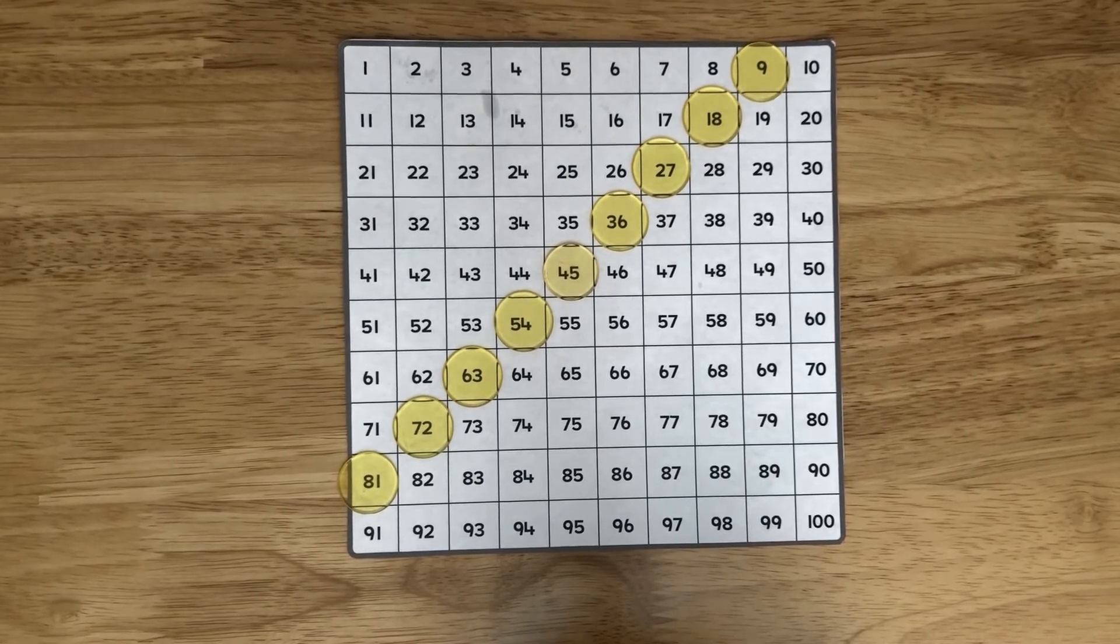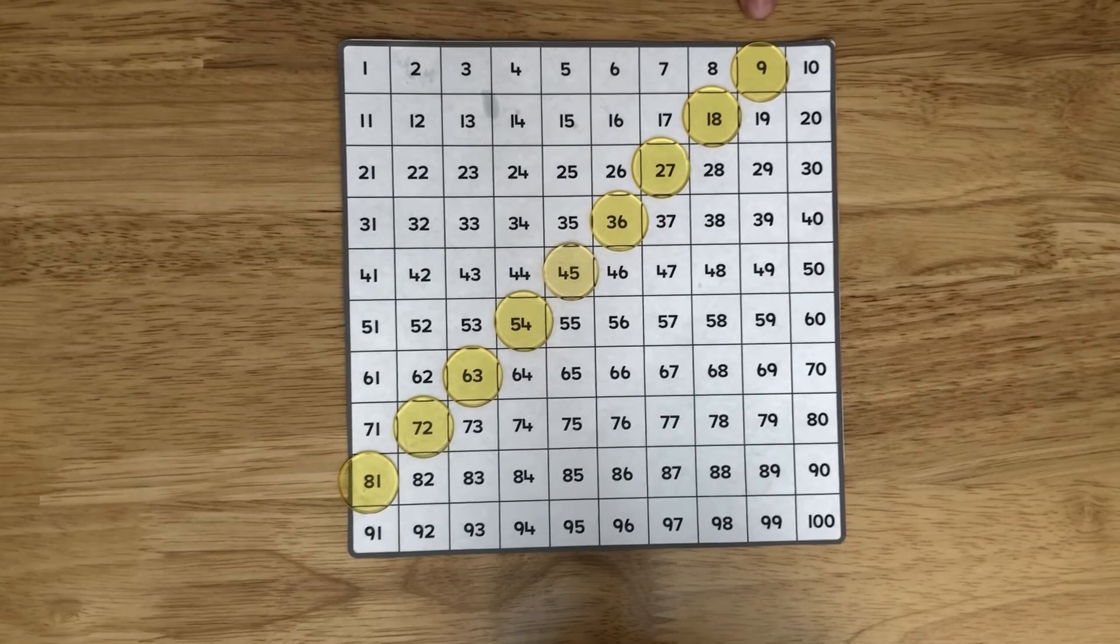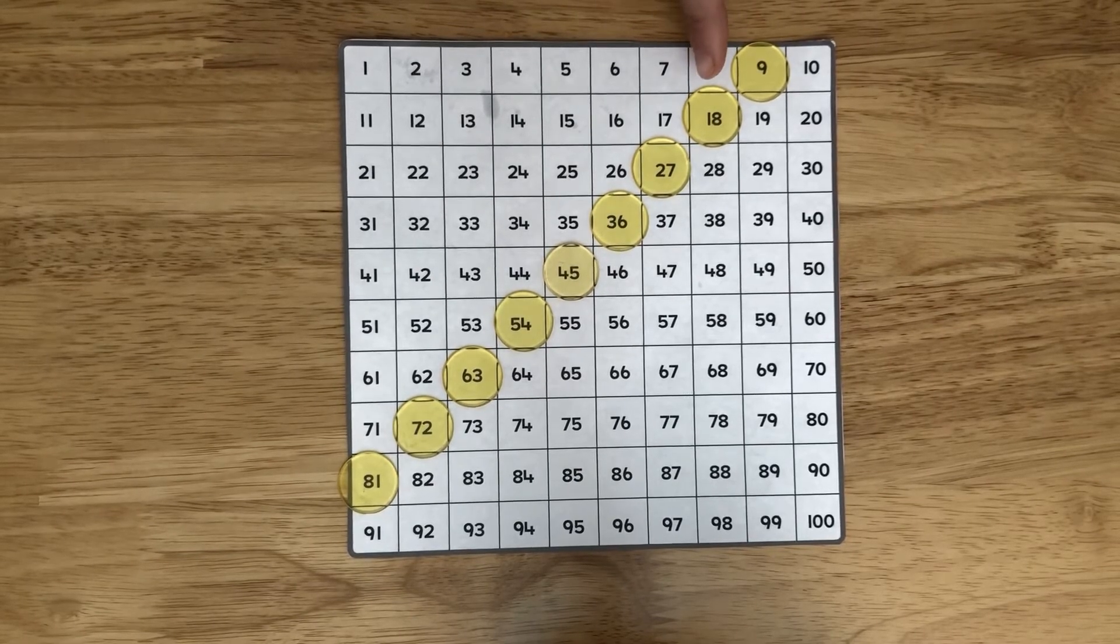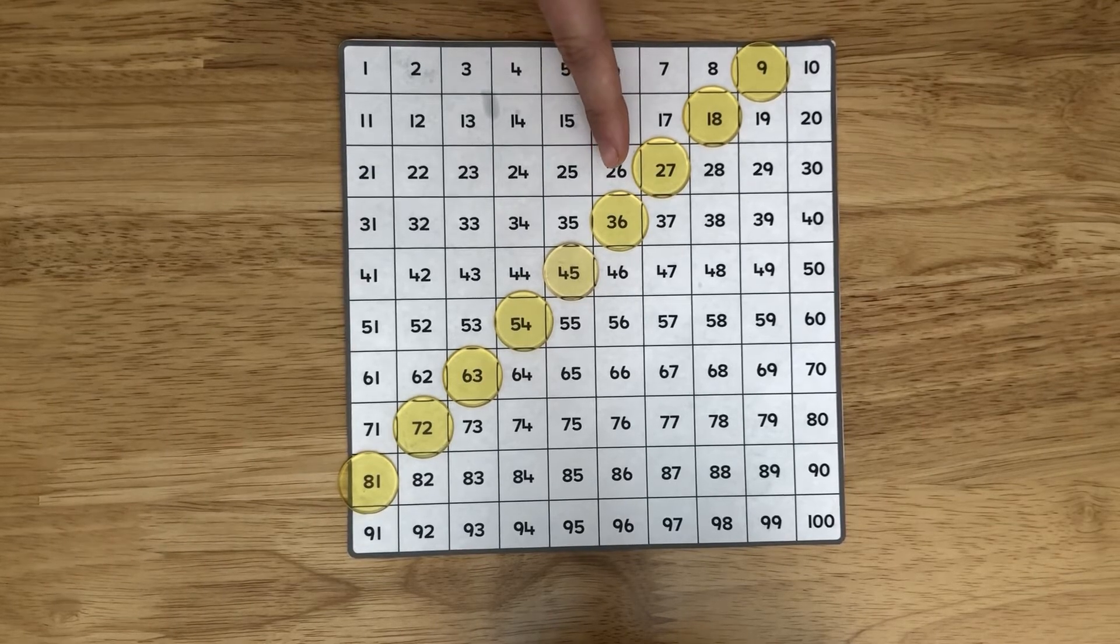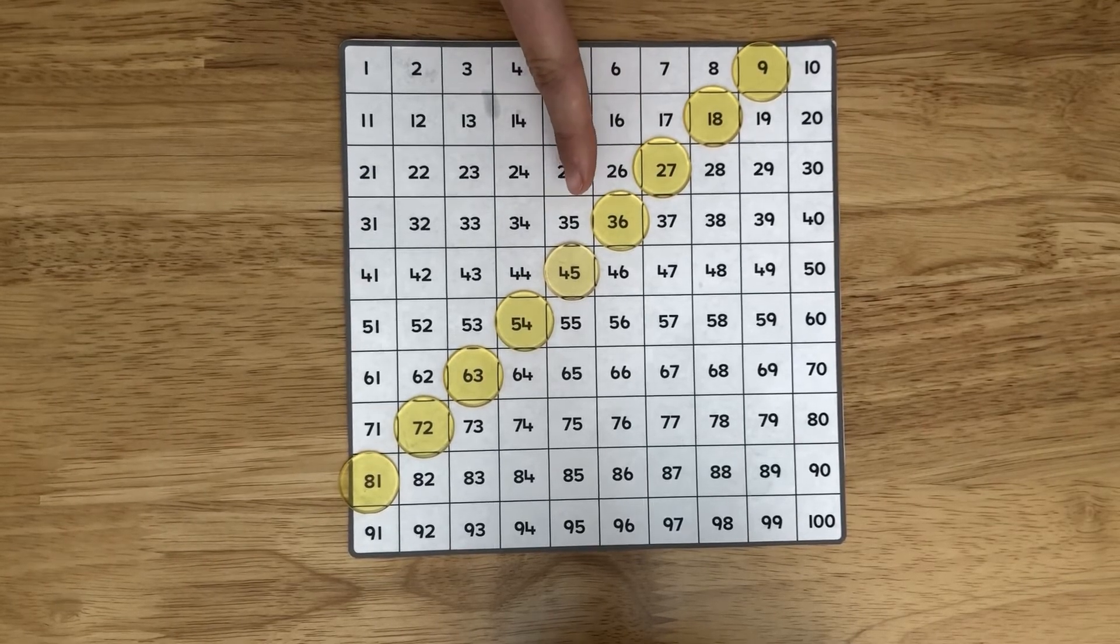Let's add up each of the digits and see what we get. So we know 9 is 9. 1 and 8 is 9. 7 and 2 is 9. 3 and 6 is 9. 4 and 5 is 9.